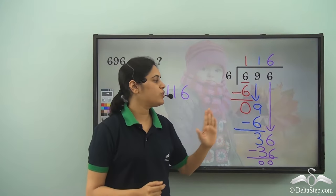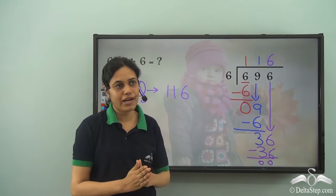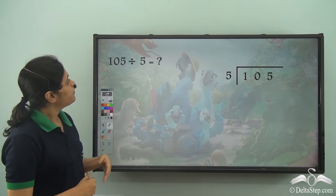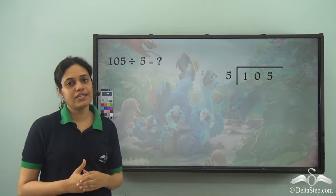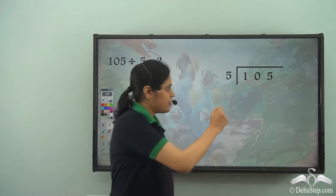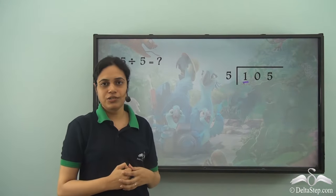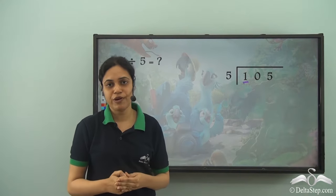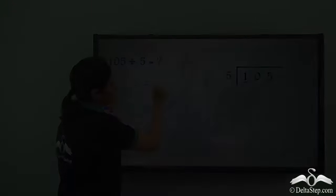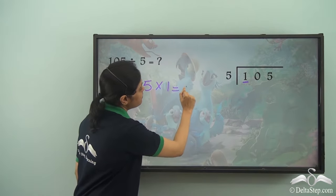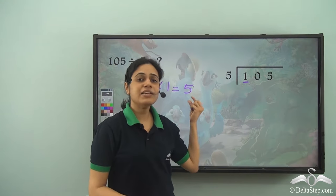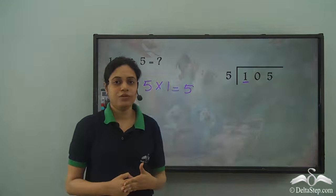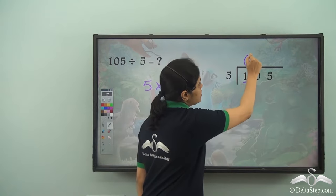You just need to remember all the steps and do them correctly to reach the right answer. Now what is 105 divided by 5? Once again we first consider the first digit which is 1. How many times does 5 go into 1? 5 into 1 is 5, but 1 is less than 5, so it does not go even once — it goes 0 times.